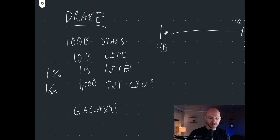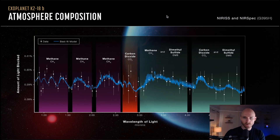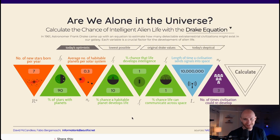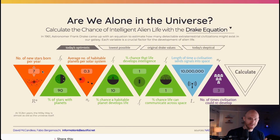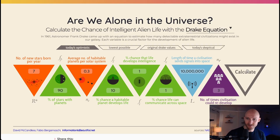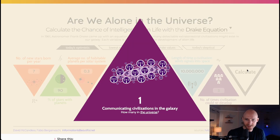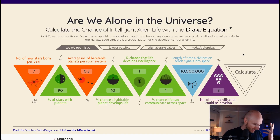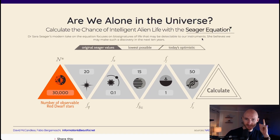If you look back at what is the chance that we are alone in the universe, there's a version of this with slightly different numbers — new stars born and so on — and it calculates about 756 communicating civilizations in the galaxy. So that is the Drake equation. But if you go to the Seager equation, that's actually the one we want to talk about today.